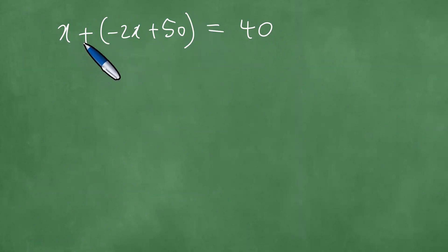X plus minus 2X will give us minus X equals 40 minus 50. Minus X equals minus 10. Divide through by negative one, getting X equals 10.